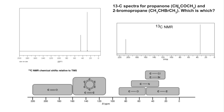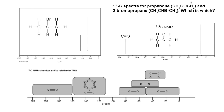It's much easier to see this if you draw the displayed formula. To work out which spectrum is which, we look at the peak position — we can see from the data sheet that one peak corresponds to a C=O environment, so that spectrum is obviously for propanone, and the other is for 2-bromopropane.